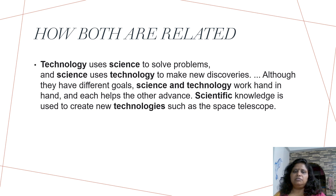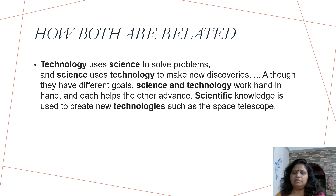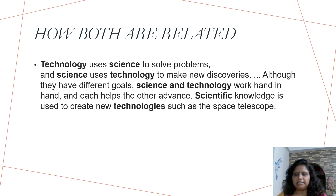How are both related? Technology and science work together to solve problems. Science uses technology for new discoveries, and technology uses new findings. Science and technology work hand in hand; each helps the other advance. Scientific knowledge is used to create new technology, such as the space telescope. Through the space telescope we can see space, but to build a telescope, new technology had to be used.